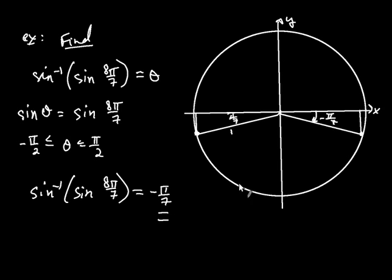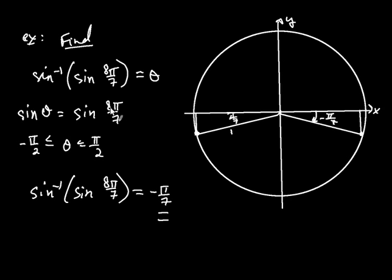This problem illustrates an important point: simply because you have inverse sine and sine — a composition of those two functions — doesn't mean they simply undo each other and you get back the angle you started with. You have to think about the second restriction on the output angle, and that may lead you to an angle different from what you started with.